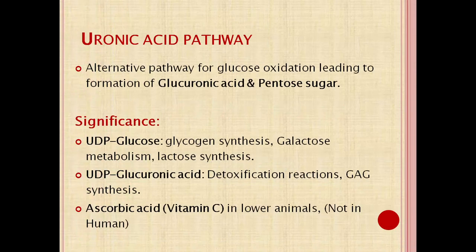Uronic Acid Pathway. It is an alternative pathway for glucose oxidation, leading to the formation of glucuronic acid and pentose sugar.